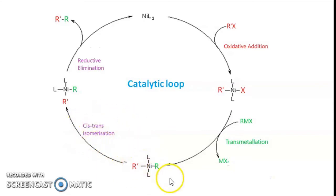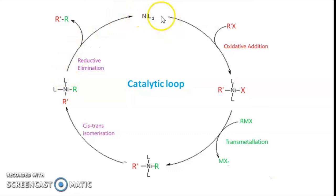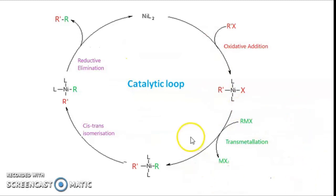In cis-trans isomerization there is a slight rearrangement of the ligands and organic groups attached to the transition metal. This is then followed by reductive elimination, wherein the carbon-carbon bond is formed between the two organic moieties and the nickel or palladium catalyst is regenerated. The nickel, which was in plus two oxidation state, is brought back to zero oxidation state. This is the common catalytic loop for any coupling reaction, with slight differences particularly in the transmetallation step.